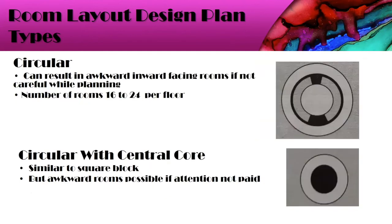Next is the circular style of building. The key consideration here is that there should be no inward-facing rooms, otherwise a room would have a view of a wall. The rooms that can fit per floor are 16 to 24 depending on the circumference of the building. Similar to this is the circular style with a central core, where all services and public areas are at the center and rooms are on the outer circumference. Again, there must be no inward-facing rooms. All these factors must be considered while designing the hotel.